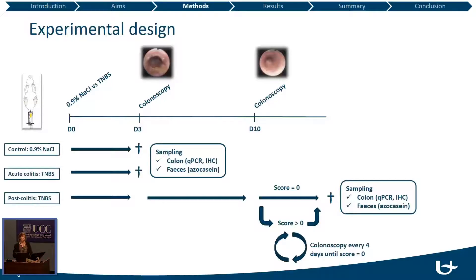Regarding the experimental design, we have three different groups: the controls, the acute colitis, and the post-colitis animals. On day zero, control animals receive an enema with 0.9% sodium chloride, and the acute and post-colitis animals receive a TNBS enema. On day three, we performed a colonoscopy to monitor the colitis in vivo. Animals that received the TNBS enema showed signs of inflammation, confirming acute colitis. At day three, the controls and acute colitis animals were sacrificed and colon samples were collected for qPCR, immunohistochemistry, and fecal samples for an azocasein assay to determine protease activity.